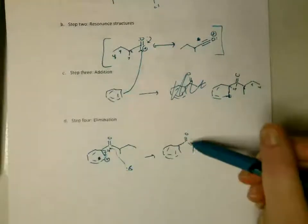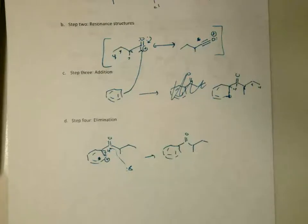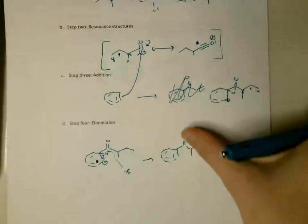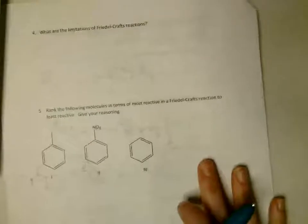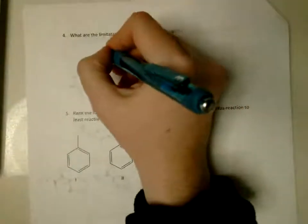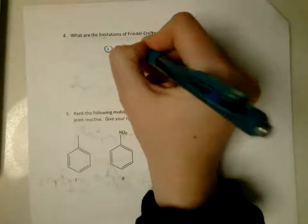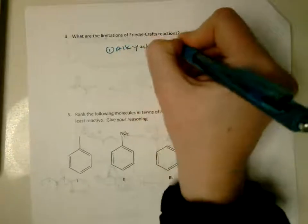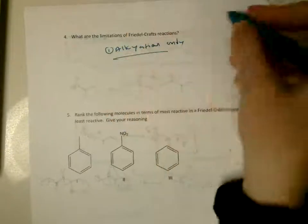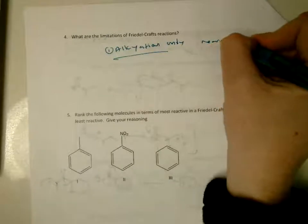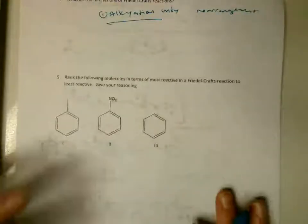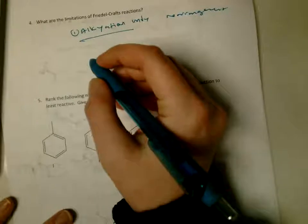If you then wanted to get rid of the carbonyl group, you could do a Clemmensen reduction or Wolff-Kishner reduction, which would eliminate the carbonyl and make it just an alkyl group. Now, question four: what are the limitations of Friedel-Crafts reactions? One we've already seen is that only alkylation, not acylation, will undergo rearrangement.